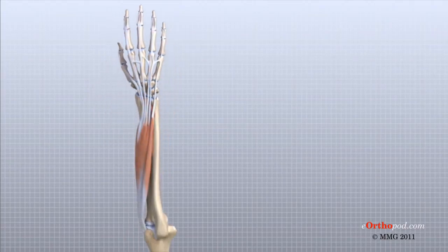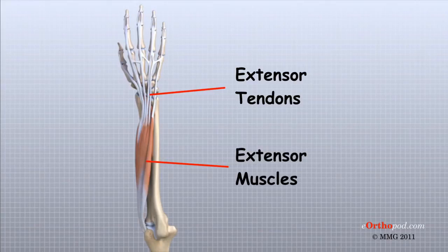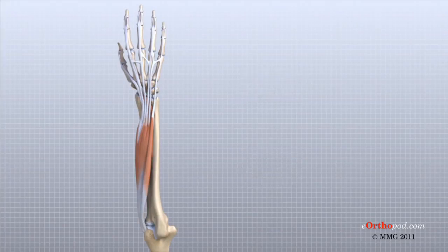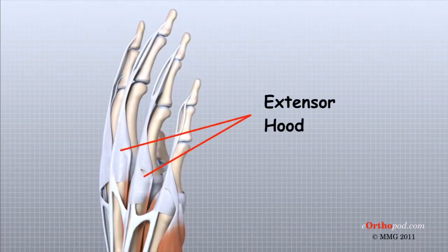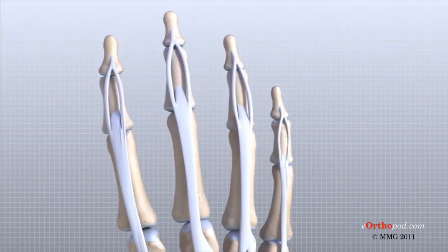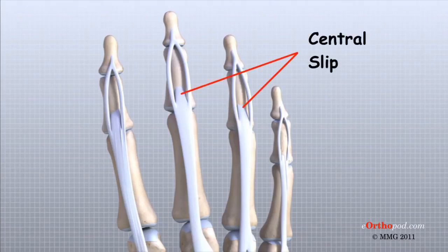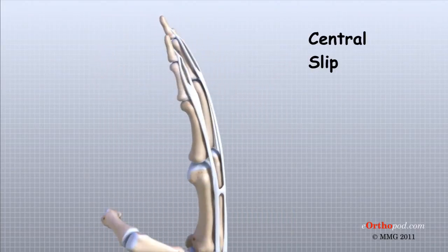The tendons that allow each finger joint to straighten are called the extensor tendons. The extensor tendons of the fingers begin as muscles that arise from the backside of the forearm bones. These muscles travel towards the hand where they eventually connect to the extensor tendons before crossing over the back of the wrist joint. As they travel into the fingers, the extensor tendons become the extensor hood. The extensor hood flattens out to cover the top of the finger and sends out branches on each side that connect to the bones in the middle and end of the finger. The place where the extensor tendon attaches to the middle phalanx is called the central slip. When the extensor muscles contract, they tug on the extensor tendon and straighten the finger. Problems occur when the central slip is damaged, as can happen with a tear.